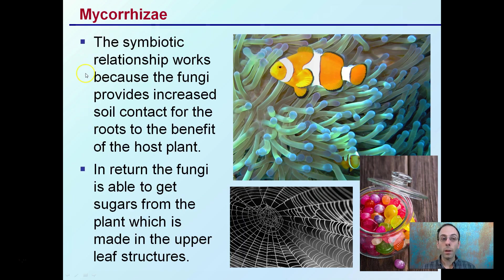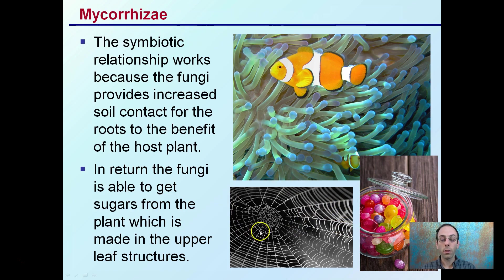It's a symbiotic relationship that works because the fungi provide increased soil contact with the roots to benefit the host plant. The fungus provides this increased web of interaction with the soil, and in return, the fungi is able to get sugars from the plant, which are made in the upper leaf structures. The fungus provides increased surface area; the plant provides sugars.